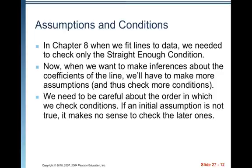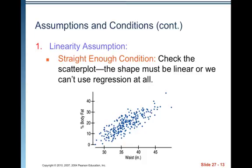We need to be careful about the order in which we check conditions. If an initial assumption is not true, it makes no sense to check for later ones. So, first thing we need to do, we want to be able to assume the data are linear and so we need to check the straight enough condition. The way you do that is you check the scatter plot. The shape must be linear or we can't use regression at all.